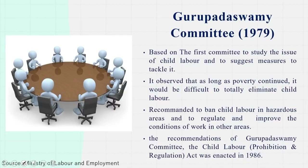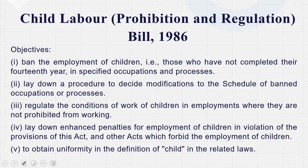There was also a very critical Gurupadas Wami Committee of 1979 — the first committee to study the issue of child labour and suggest measures to tackle it. The committee observed that as long as poverty continued, it would be difficult to totally eliminate child labour. The committee recommended banning child labour in hazardous areas and regulating and improving conditions of work in other areas. Based on the recommendations of this committee, the Child Labour Prohibition and Regulation Act was enacted in 1986.